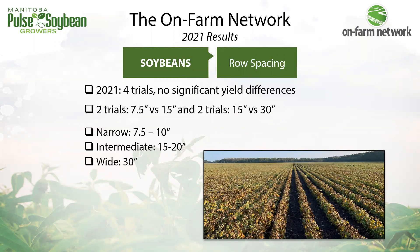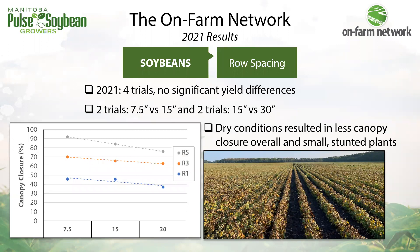Moving into soybean row spacing — we have small plot research on this topic, but how does it shape up at field scale? Last year we had four trials: two comparing 7.5 to 15 inches and two comparing 15 to 30 inches. For discussion, I'll refer to 7.5–10 inches as narrow, 15–20 as intermediate, and 30 inches as wide. To help inform these trials, we collect canopy closure measurements to see how much bare ground is left open for weeds and how much sunlight we're capturing.